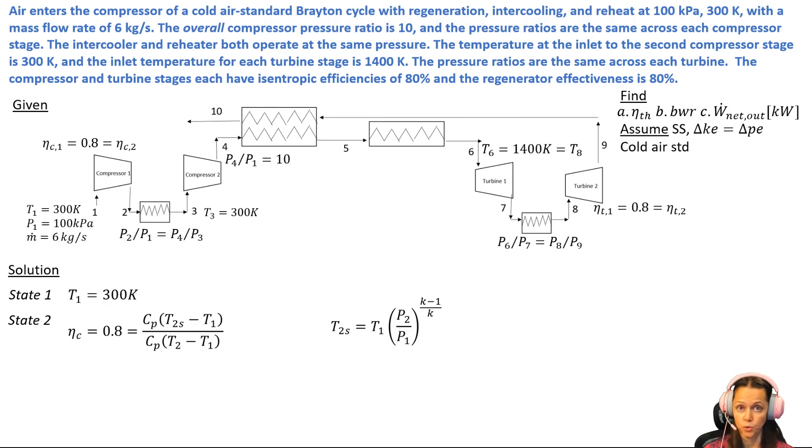I know that P2 over P1 and P4 over P3 are equal to one another, and I know the overall pressure ratio is 10. So what I'm going to do is use that information and tease out what P2 over P1 is. P4 over P1, overall compressor ratio, that's 10.